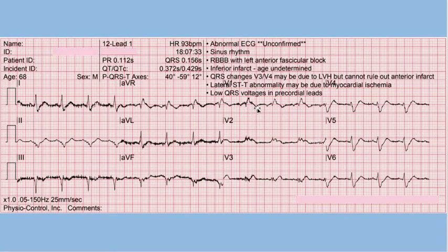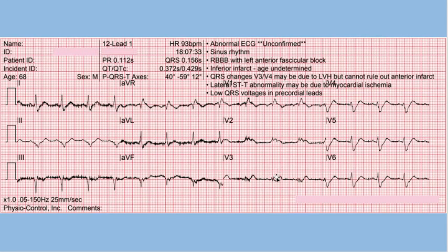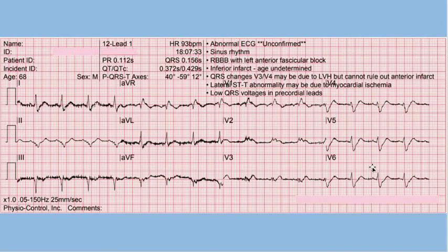Here in the right precordium, isolating the ST segment or J point, you can see that there is elevation at the J point. This goes against everything we said should be expected as a normal variant for right bundle branch block — we should have slight ST segment depression in V1 through V3, but instead we have ever so slight ST segment elevation. Furthermore, there are concordant T waves along with the ST segment elevation, especially in V3. Moving more laterally, the J points in V4 through V6 — which are expected to be at baseline — are demonstrably depressed.